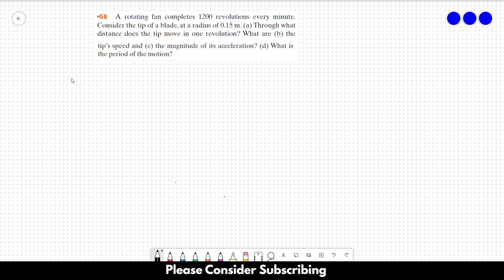Okay, so let us draw a fan here. So that's our fan. Let's say we have three blades - this is one blade, this is another blade, and this is the third blade over here. We know that the radius here, r is equal to 0.15 meters.